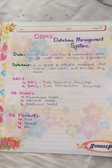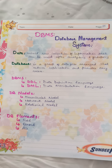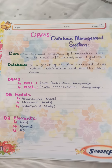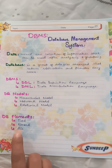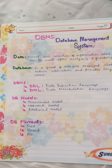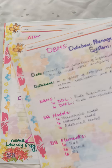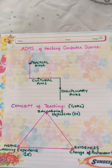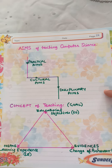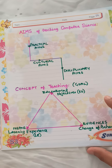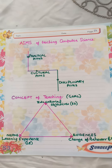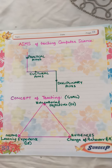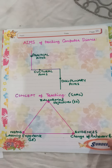We have the DBMS — database management system — covering what is data, what is a database, the languages used in DBMS, the models, and the elements. A database has tables; each table must have a field name, records filled in, and a file. Then the aims of teaching computer science: practical aim, cultural aim, and disciplinary aim. In the concept we have the goal — which is the educational objective — the means, that is the learning experience, and the evidence, which is change of behavior.